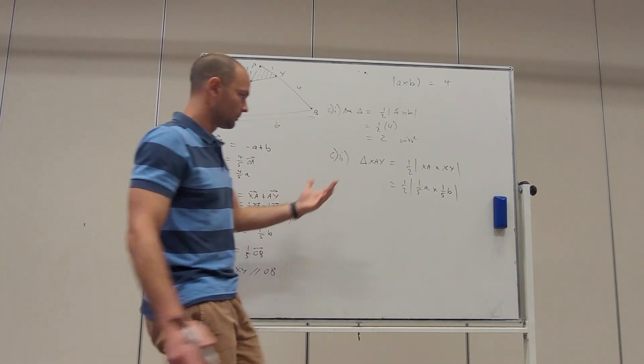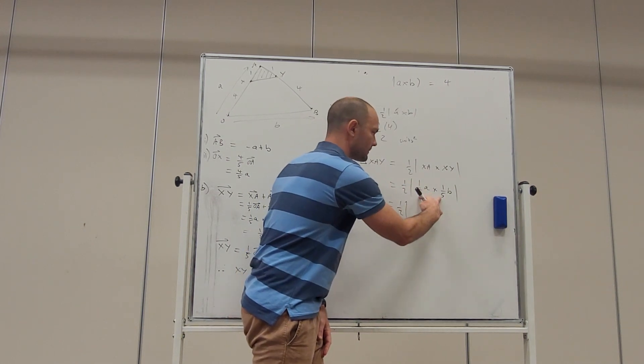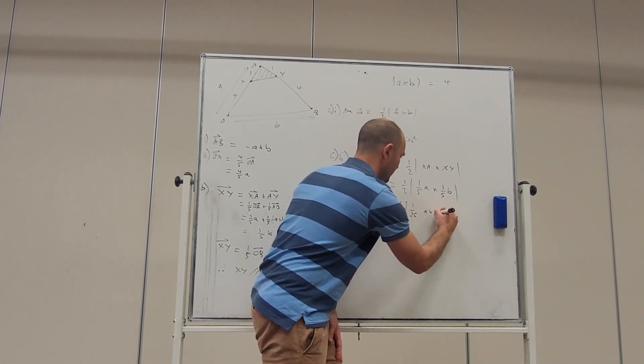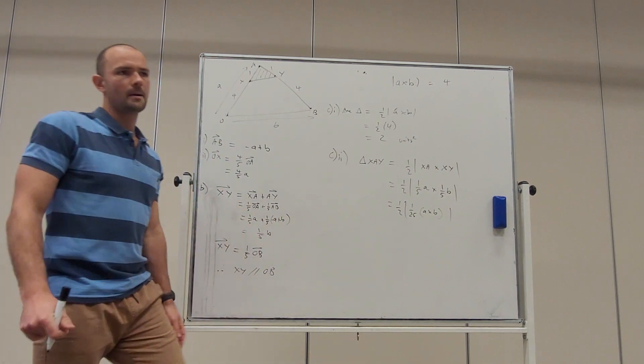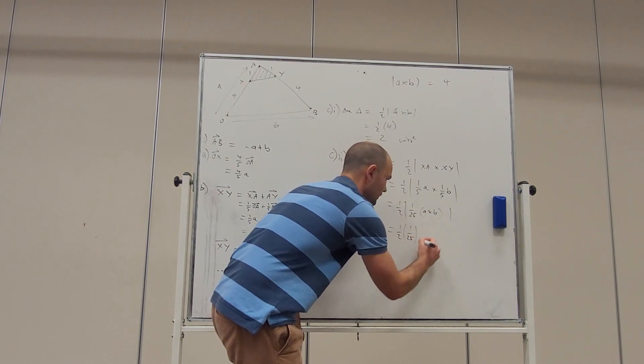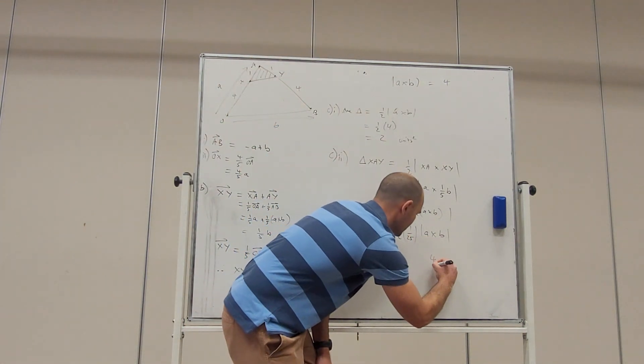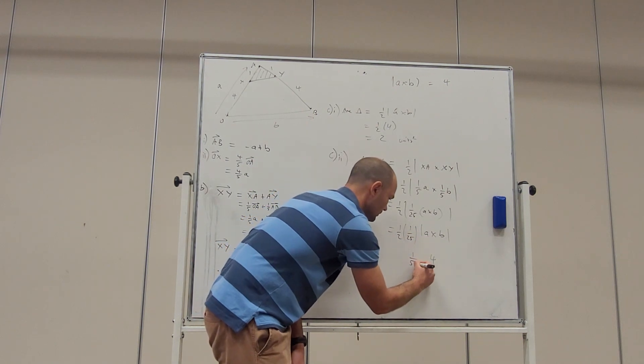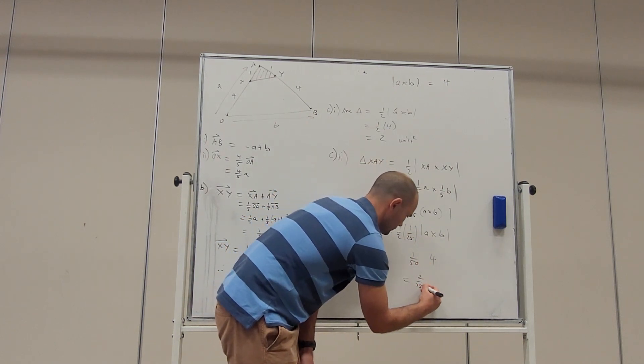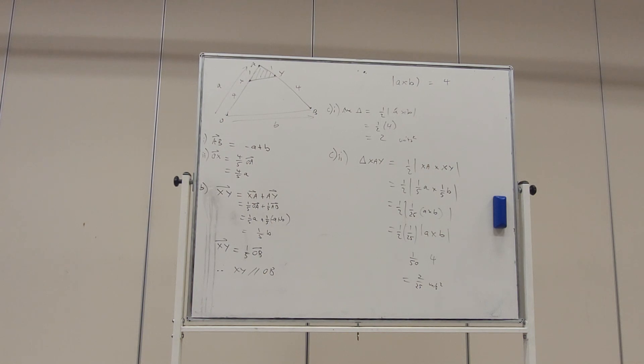Alright, now we'll use that property. What this is, is it's half and we have the modulus of one on five times one on five, that's one on twenty-five, A cross B. Alright, and the modulus of one on twenty-five is just half times one on twenty-five times A cross B. We know A cross B is four, we're told that. So, we've got one on fifty times four, we've got two on twenty-five squared. Two on twenty-five will be the simplest we can express that as a fraction. So, that's a nice vector proof exam question that relies on the properties of the cross product.